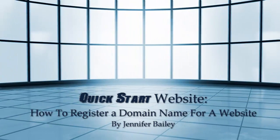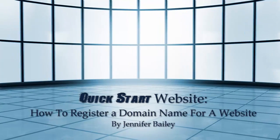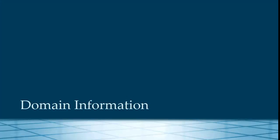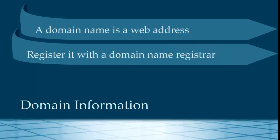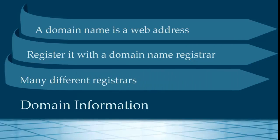But first a bit of background, and though I have covered this in a previous lecture you can go back and review that information. A domain name is basically the web address of your website. For example, my web address is jennifersbailey.com and in order to get a domain name you need to register it with a domain name registrar. There are many different registrars — I've put some links in the notes section so you can compare them and their prices, but they're all pretty much the same. So even though I'm going to use GoDaddy as an example in this lecture, you'll be able to transfer that information to a different registrar if you prefer.